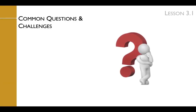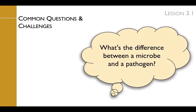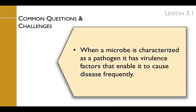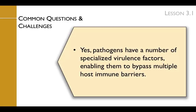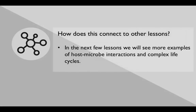One of the most common questions students ask is: what's the difference between a microbe and a pathogen? When a microbe is characterized as a pathogen, it has virulence factors that enable it to cause disease frequently. Another question students ask is: do pathogens have more than one virulence factor? Yes — pathogens have a number of specialized virulence factors, enabling them to bypass multiple host immune barriers. In the next few lessons, we will see more examples of host-microbe interactions and complex life cycles.